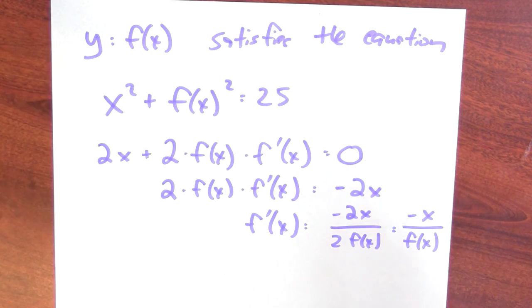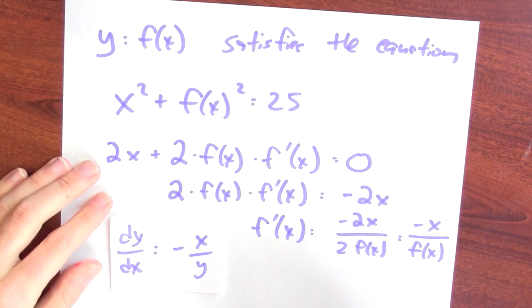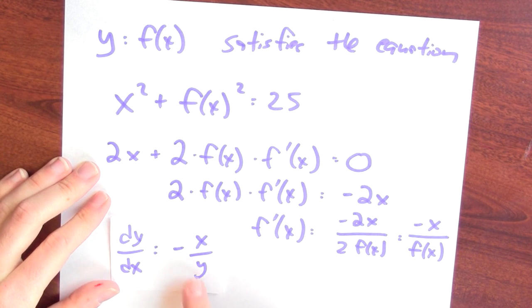It seems like a funny situation. The derivative depends on more than just x. It also has an f of x in it. Another way to say it is that the slope of the tangent line, dy dx, is negative x over y. y is f of x.